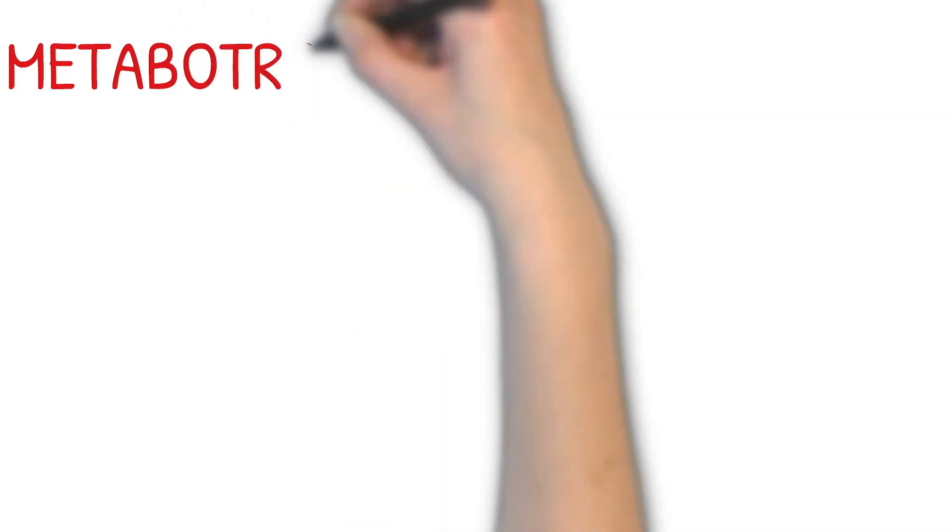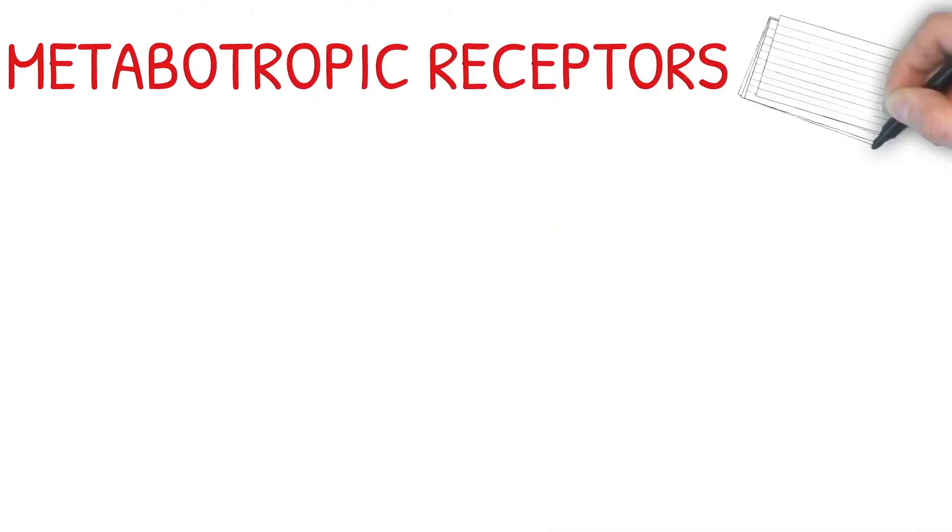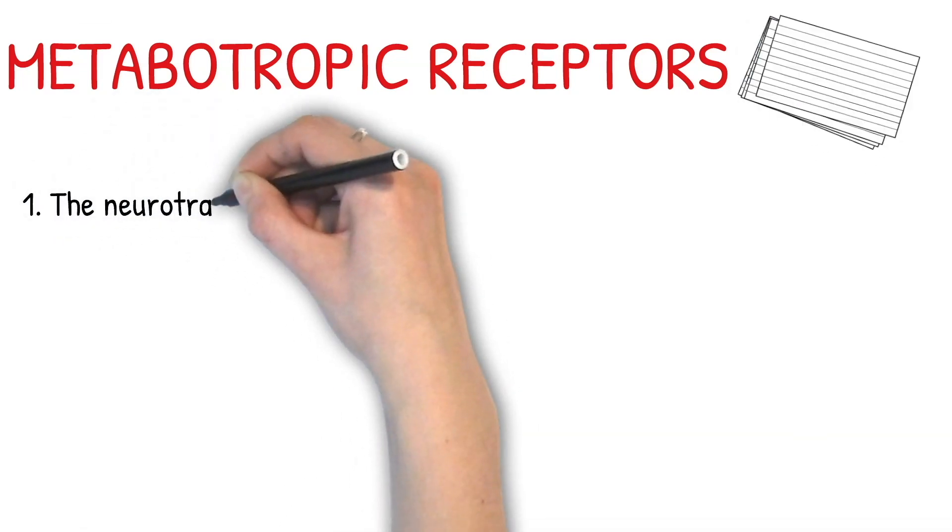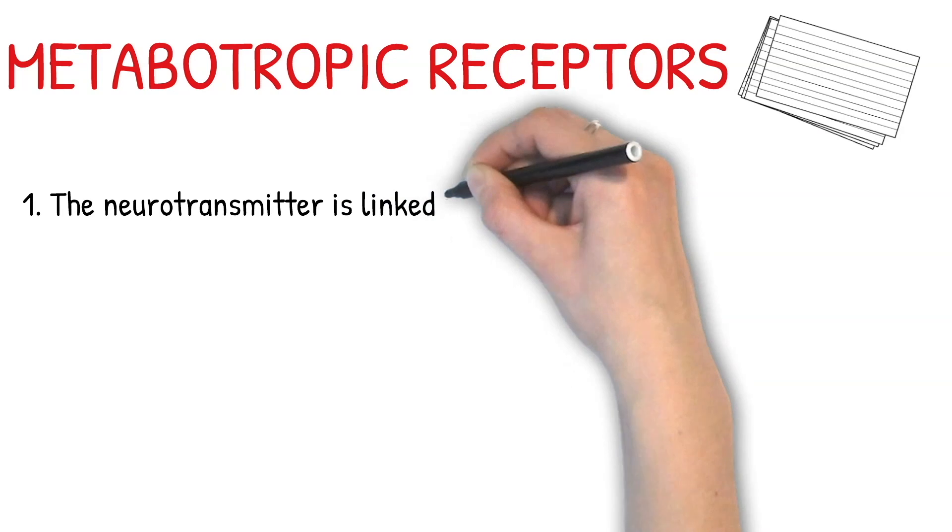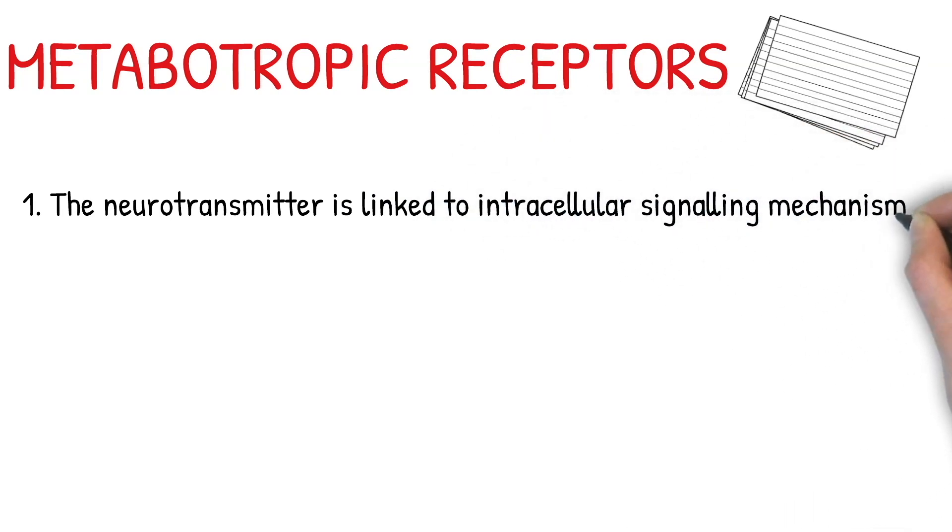Now, let's have a look at another type of receptor called the metabotropic receptor. Neurotransmitters from the synaptic cleft bind to a receptor site which is linked to downstream intracellular metabolic steps through G protein signaling cascades.